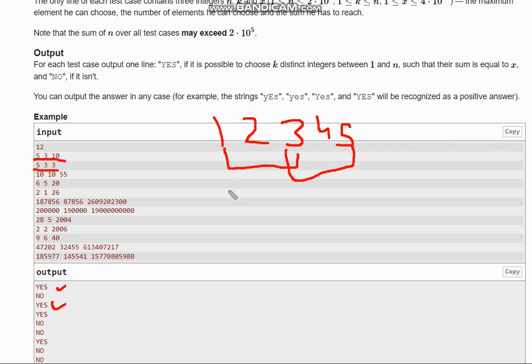So if the sum of the first 3 elements is greater than X or the sum of the last 3 elements is less than X, then we would simply output no. Else we would output yes. So I hope you all understand the solution. Thanks for watching.